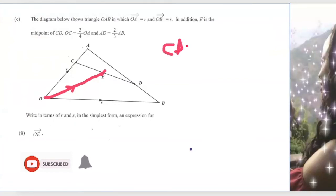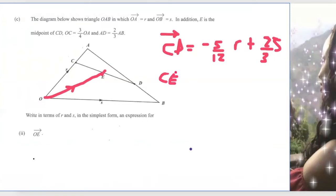So let me write CD. Because OE is at the center, the line CD is minus 5 over 12 R plus two over three S. Now OE cuts this line into 2 halves. So if I want CE, it will be a half of this line. So I will multiply this by half.